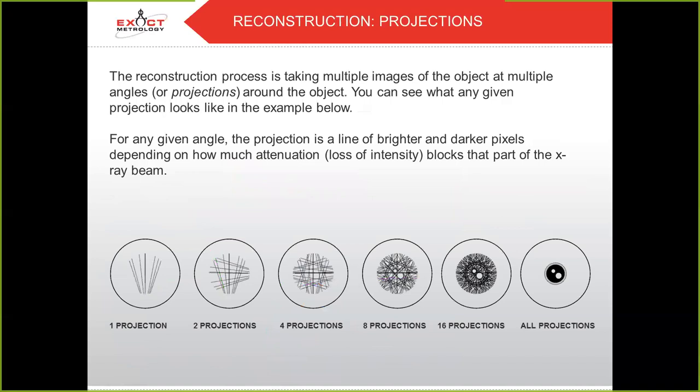On to reconstruction. The reconstruction process involves taking multiple images of the object at multiple angles or projections around the object. For any given angle, the projection is a line of brighter and darker pixels depending on how much attenuation — or loss of intensity — blocks that part of the X-ray beam. One projection gives you a simple X-ray image; two will give you a different angle on that image. As you build up more and more images, you start to develop a clear 3D dataset of whatever you are scanning.